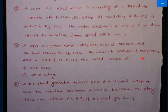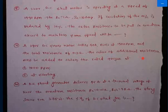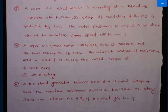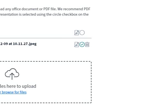To repeat: the DC shunt generator delivers 45 amperes at a terminal voltage of 220 volts. The armature resistance is 0.01 ohms, shunt resistance is 44 ohms, and the stray losses are 375 watts. We are asked to find the percentage efficiency of the DC shunt generator. Let's solve the problem.